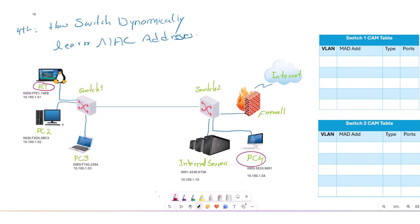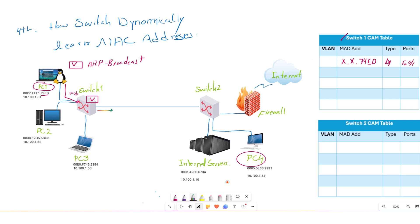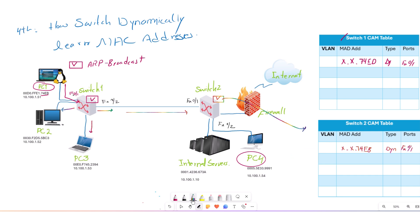In the first step, PC1 sends an ARP broadcast to find PC4's MAC address. When Switch 1 receives that ARP broadcast, it stores PC1's MAC address and then forwards the ARP broadcast out all interfaces except the port it was received on. When Switch 2 receives the ARP broadcast, it does the same process — storing PC1's MAC address and forwarding the message out all ports except the receiving port.